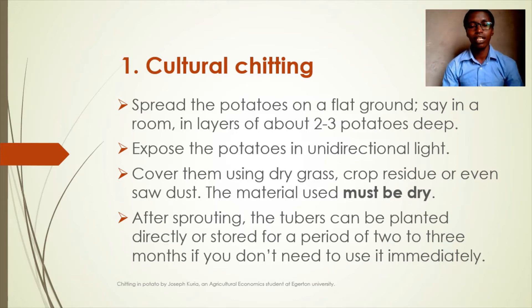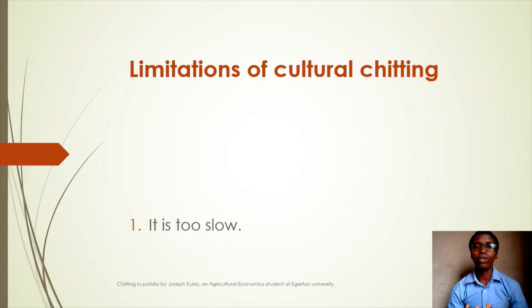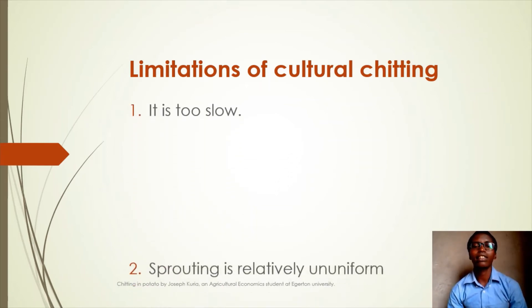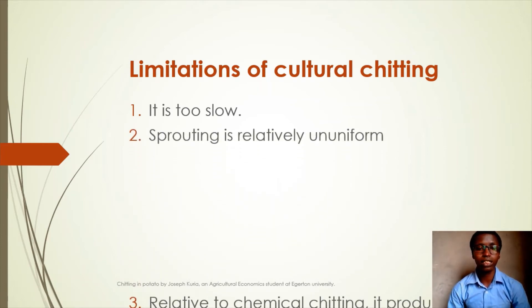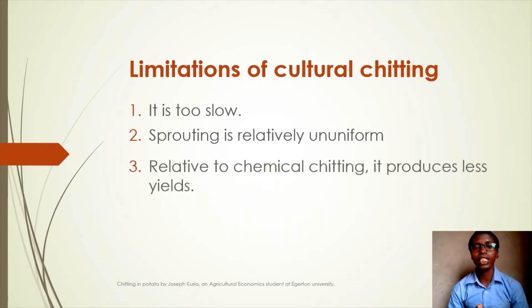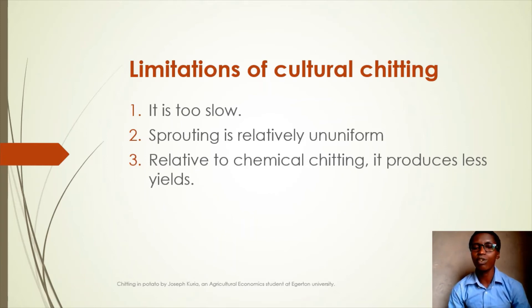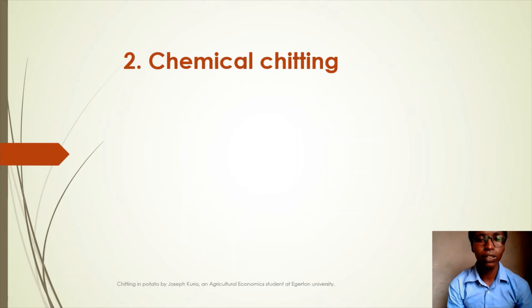After sprouting, tubers can be planted directly or even stored for a period of two to three months. What are the limitations of cultural chitting? Cultural chitting has some limitations compared to chemical chitting — it is too slow, sprouting is relatively non-uniform, and it produces less sprouts.